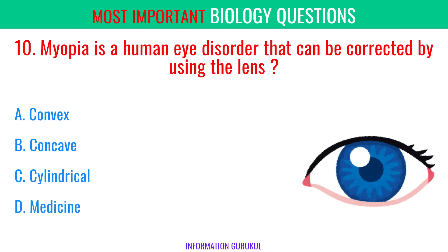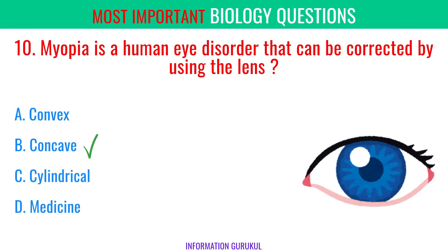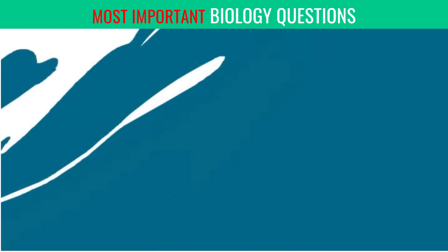Myopia is a human eye disorder that can be corrected by using which lens? Concave lens. The term used to describe short-sightedness is myopia.